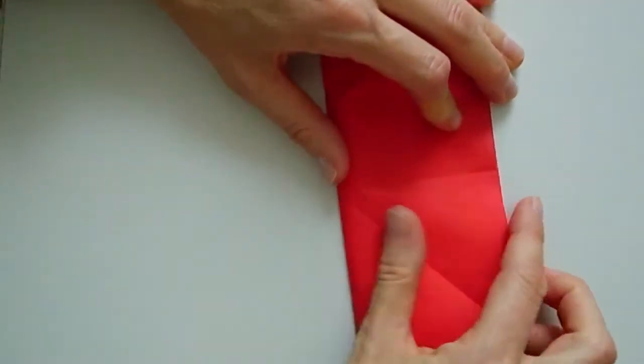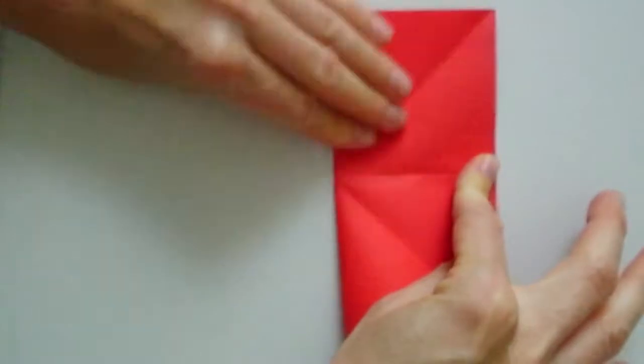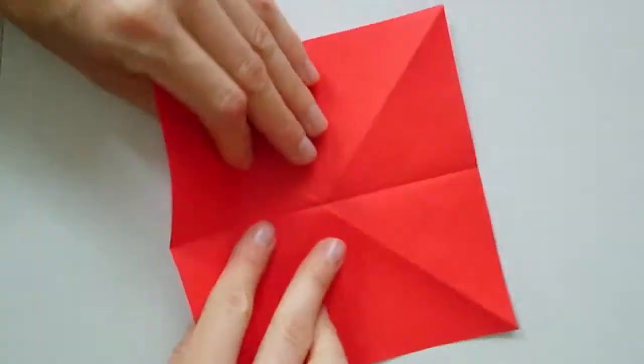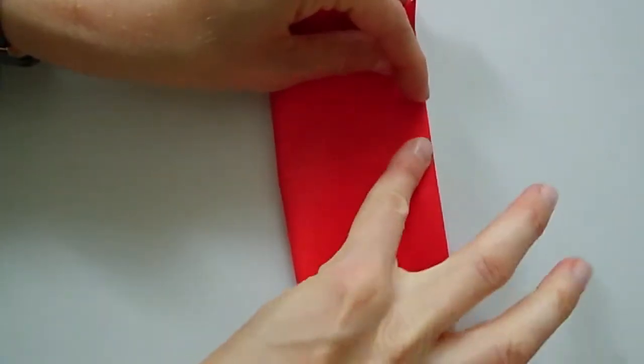So you are going to start by folding the paper in half. Fold it in half in both directions.